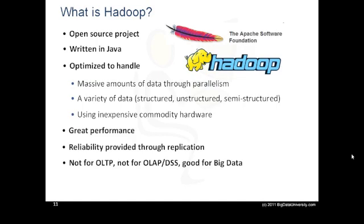Hadoop is not suitable for online analytical processing or decision support system workloads where data are sequentially accessed on structured data like a relational database to generate reports that provide business intelligence. Hadoop is used for big data. It complements online transaction processing and online analytical processing — it is not a replacement for a relational database system.